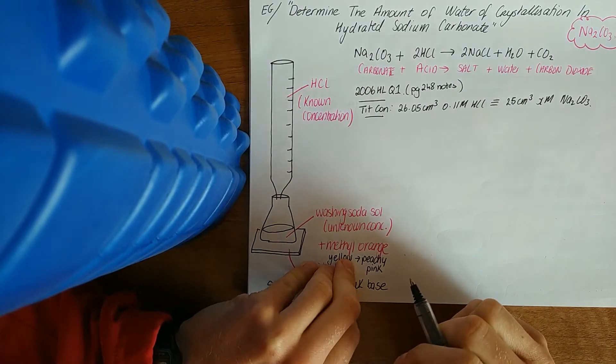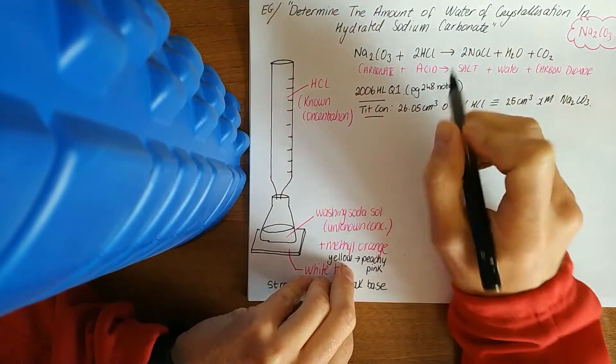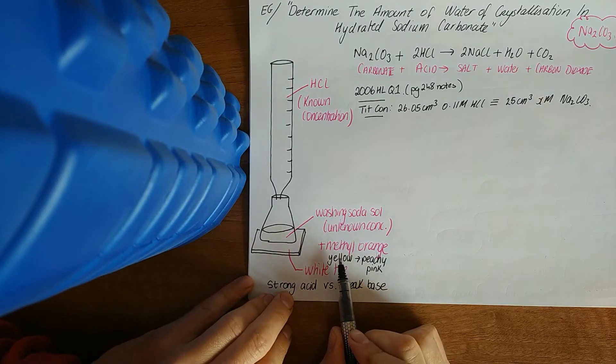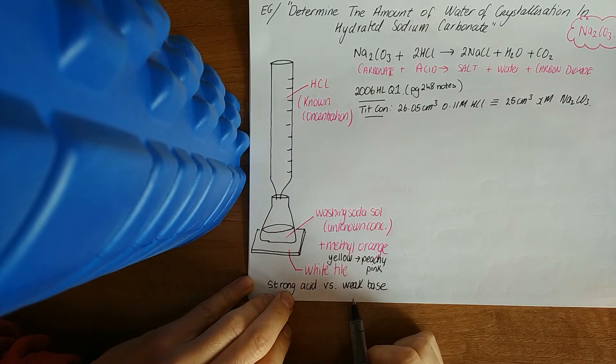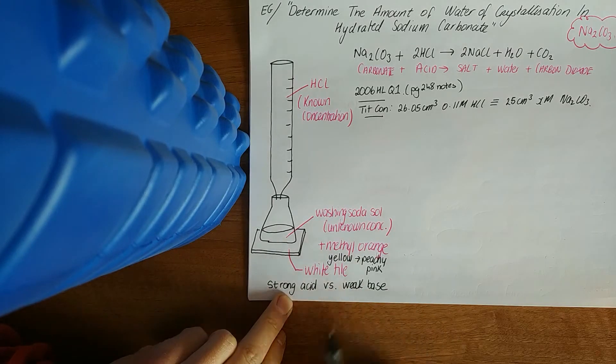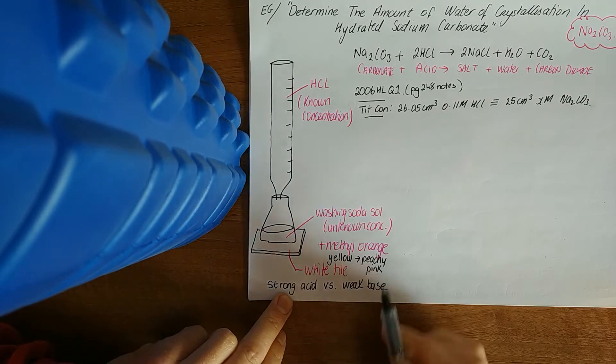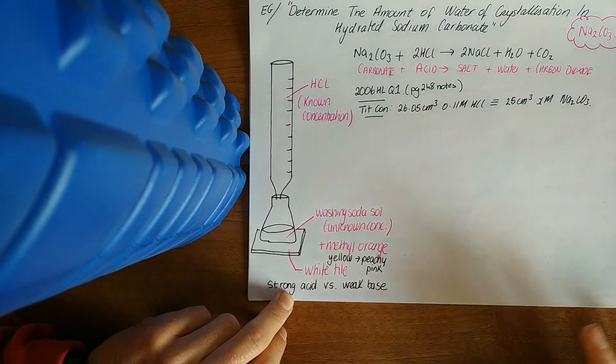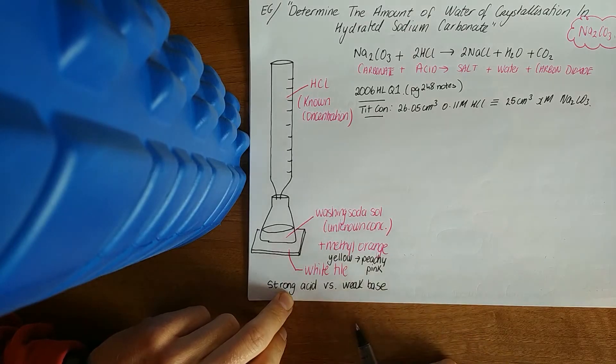When we're doing a titration, this is deemed a weak base and a strong acid. A strong acid, weak base titration involves the use of the indicator methyl orange. For A-level, they'll know the color change lies within the vertical part of the curve for methyl orange.